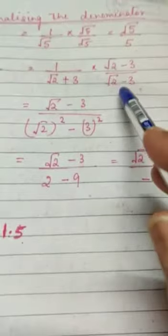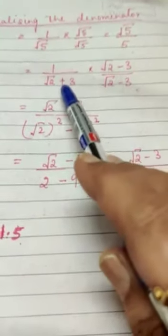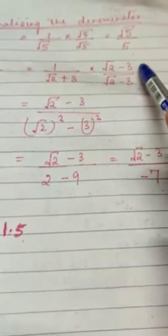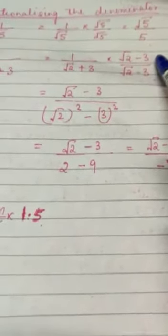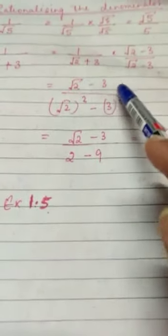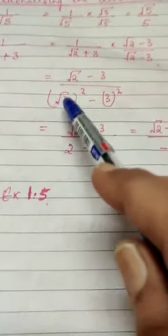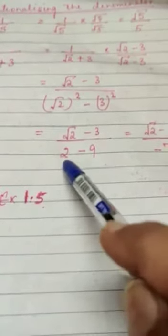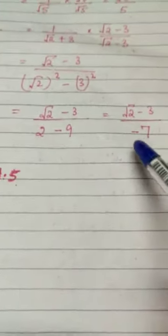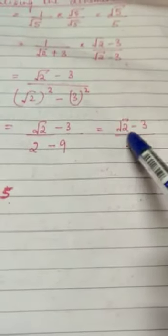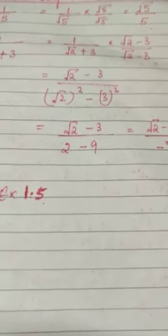This is in a way we are finding an equivalent fraction. The numerator becomes root 2 minus 3, while the denominator is (root 2) whole square minus (3) square. That is, the denominator is 2 minus 9, that is minus 7, and this is a rational number. So we have rationalized the denominator.